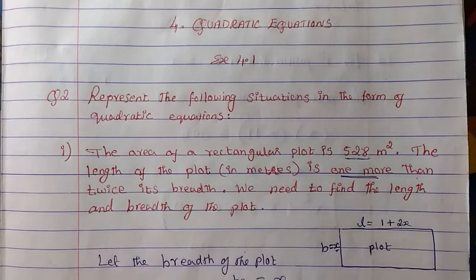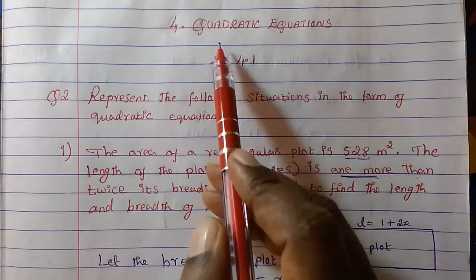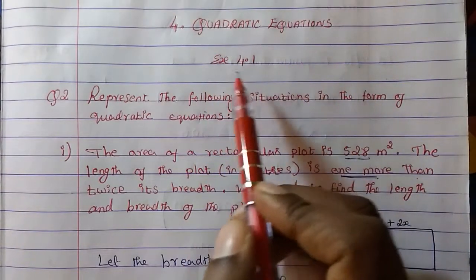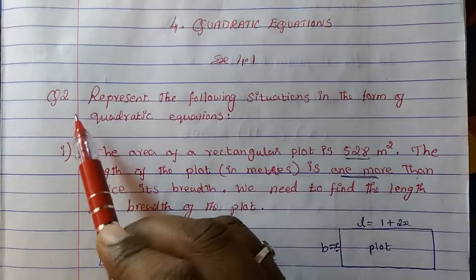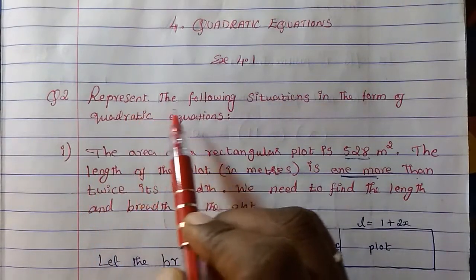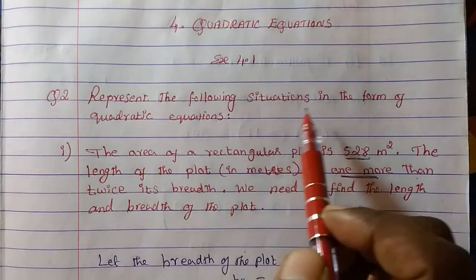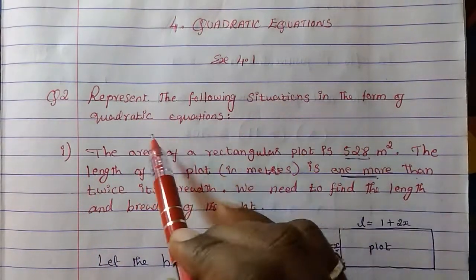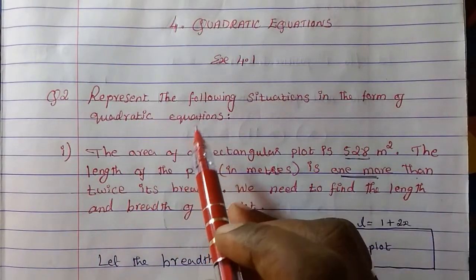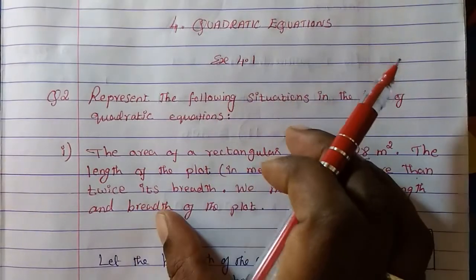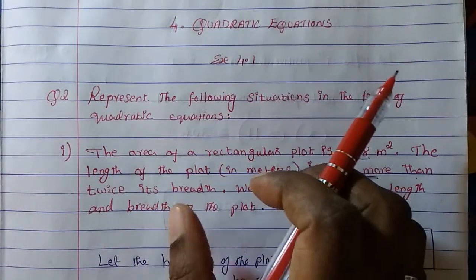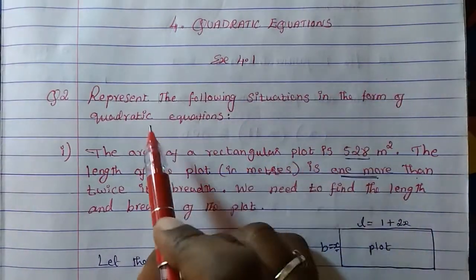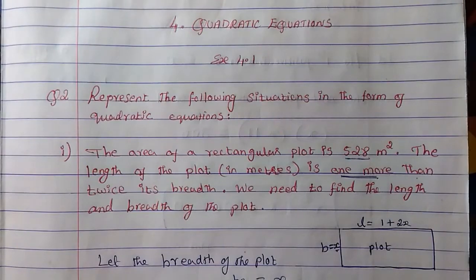Hi everyone, welcome to MASHMAT. Today we are going to study chapter 4 quadratic equations, exercise 4.1 question 2: Represent the following situations in the form of quadratic equations. Situations are given to us and we have to form them into quadratic equations.